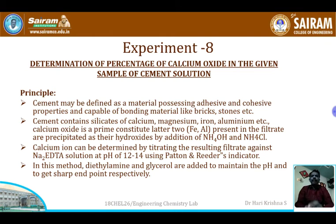Cement mainly contains silicates of calcium, magnesium, iron, and aluminum. We dissolve the cement sample in sulfuric acid, and then add ammonium hydroxide and ammonium chloride. The silicates of calcium, magnesium, and aluminum get precipitated, and the filtrate now contains only calcium and magnesium ions.